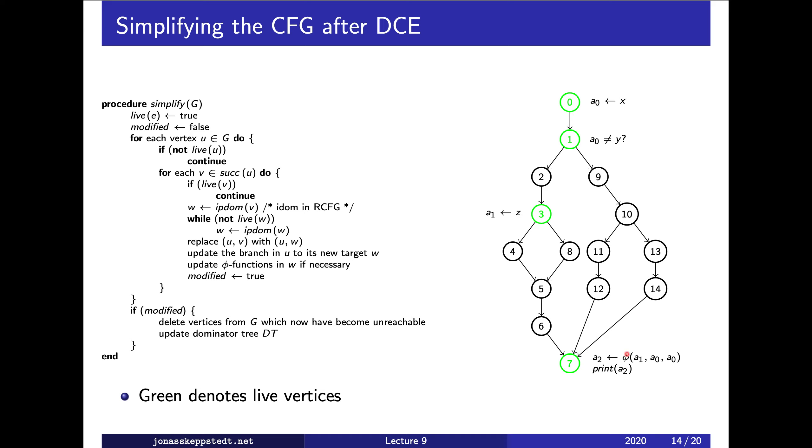How to do that? We need to have the proper value for each operand when we come from a certain vertex. How to do that is described in detail in the book. Then we set modified to true and continue. If there was some modification, we simply remove the dead vertices and update or recompute the dominator tree.